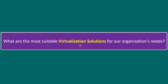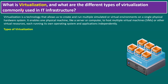What is virtualization and what are the different types of virtualization commonly used in IT infrastructure? Virtualization is a technology that allows us to transform hardware into software. Using a physical hardware, we translate it into a software-generated machine — in other words, we call it a virtual machine. Virtualization allows us to create and run multiple simulated or virtual environments on a single physical hardware system.